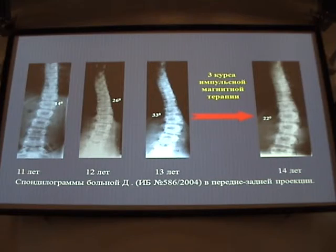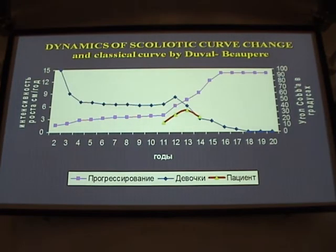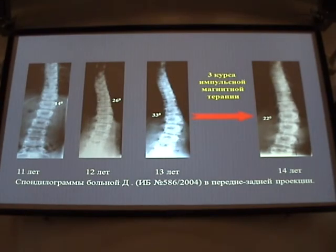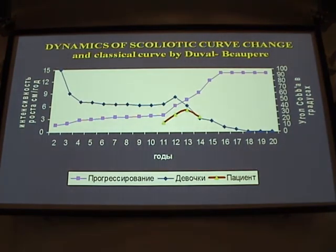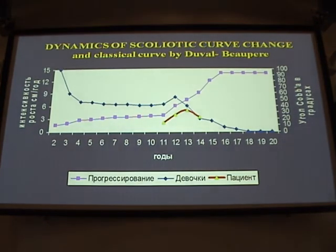Let me present some clinical examples. This shows the dynamics of spondylograms of one patient from age 11 to 14. The red arrow shows the start of comprehensive therapy with magnetotherapy and no Chêneau brace. The data from the spondylograms were used to build the Cobb angle curve. When we looked at the spondylograms, this was a girl still continuing to grow from 11 to 14 years, so we expected further increase in the scoliotic deformation — but this did not happen.